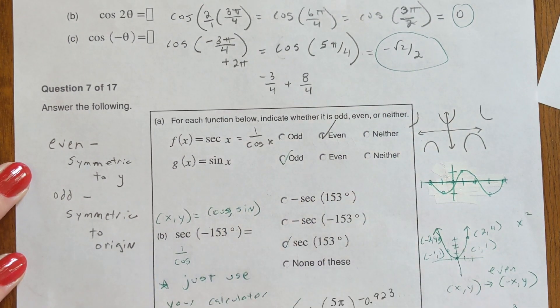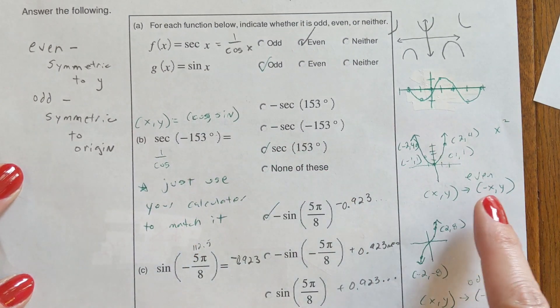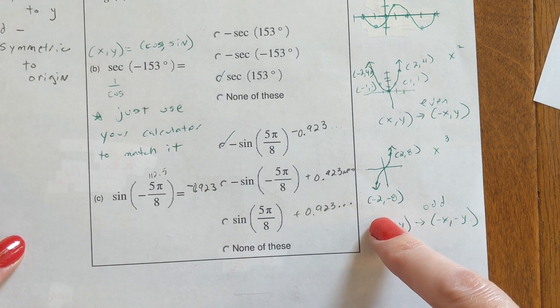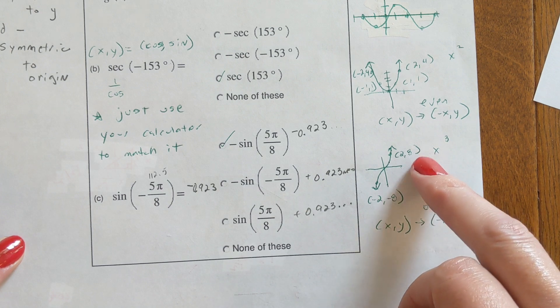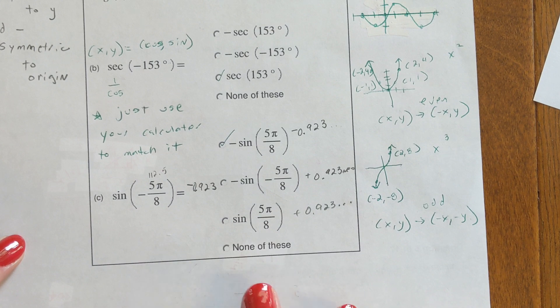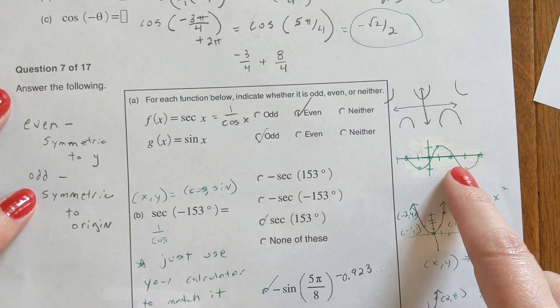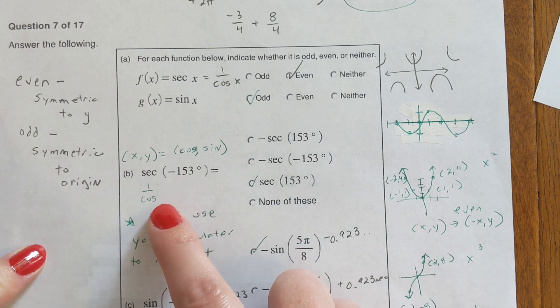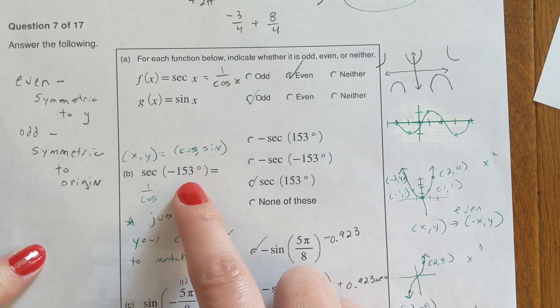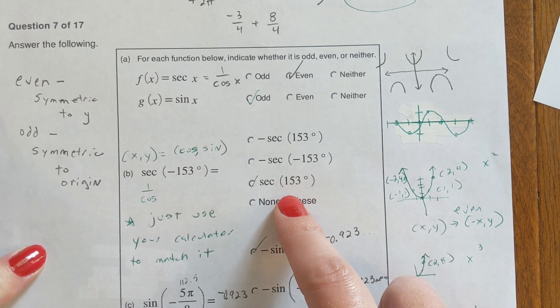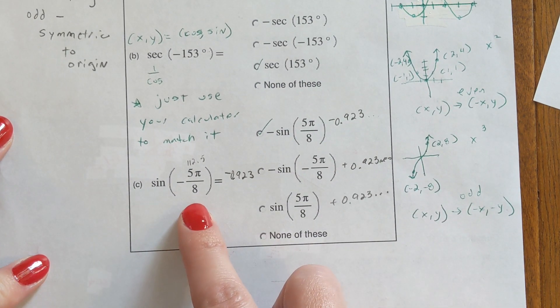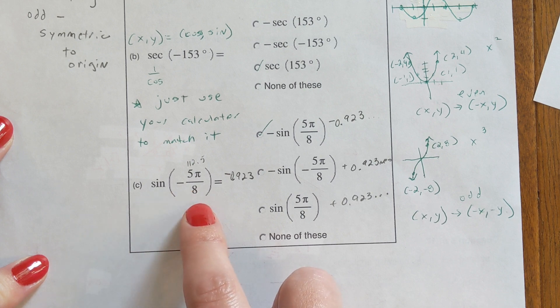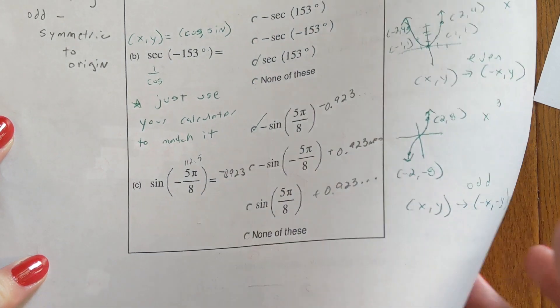If you put in y equals sine x, change your zoom to trig, you get this picture. This picture is odd - it is symmetric to the origin. Even flips over, the x changes. When it was odd, the x and the y both change to negatives. So instead of being at the point negative two, negative eight on the graph of x cubed, it became positive two, positive eight. On these down here, honestly I would just put them in your calculator. Remember that secant is cosine, so you're going to have to do one divided by the cosine of negative 153 and get that number and find out which one matches it.